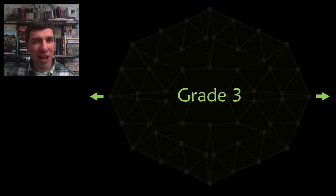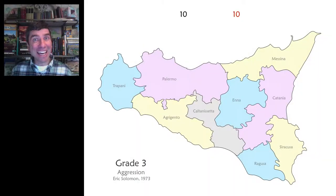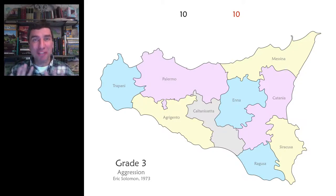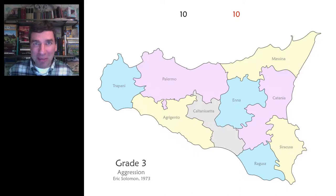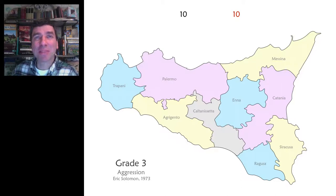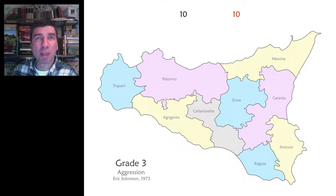The grade 3 unsolved problem comes to us in the form of a game! As a game designer that makes me very happy. Games belong in the mathematics classroom because they're a celebration of problem solving, and this one is especially sweet. It was designed in 1973 by Eric Solomon and it belongs front and center in the curriculum of any child learning subtraction.